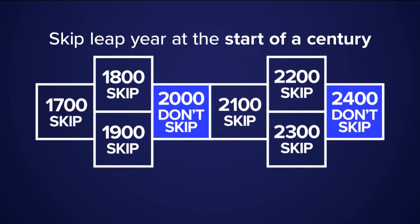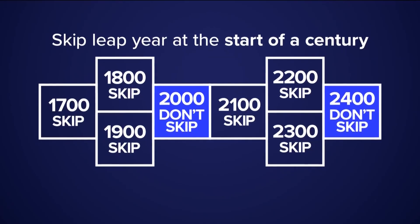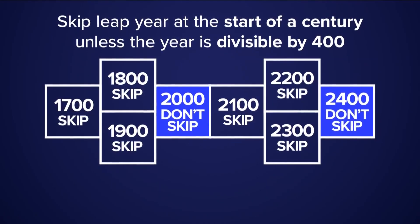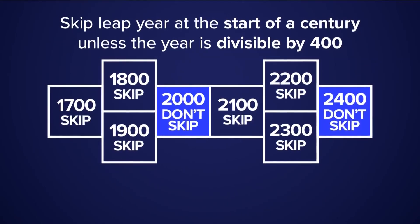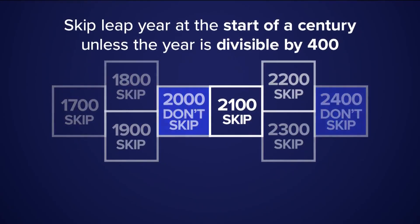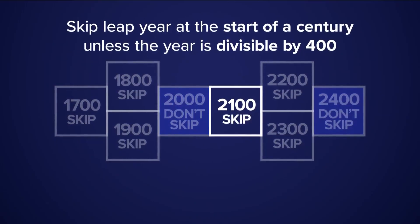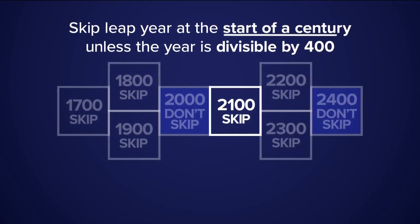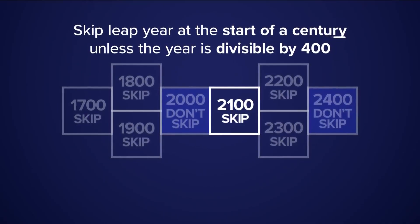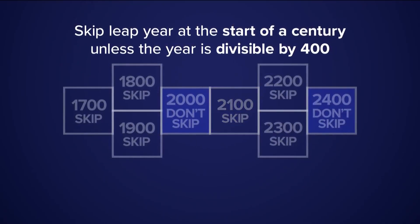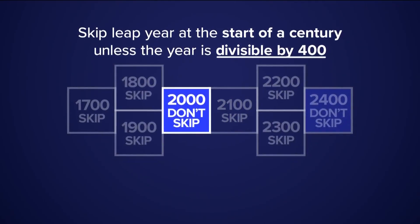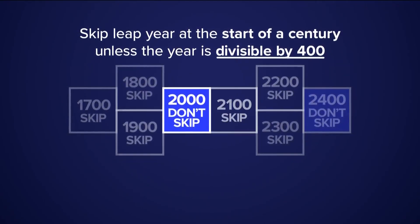You skip a leap year if it falls on the start of a century, unless that year is divisible by 400. So, for example, every four years we'll acknowledge the extra day in February. But in the year 2100, we will skip that leap year since it falls on the start of a century and it is not divisible by 400. Back in the year 2000, that was a leap year, but since it was divisible by 400, we did not skip it.